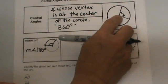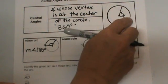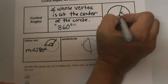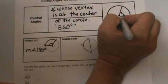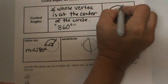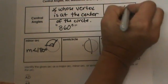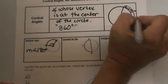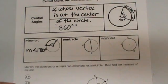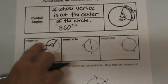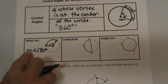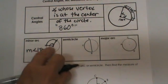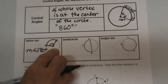So central angles take on the measure of the arc. Let's say for example this central angle measured 100 degrees. That means the arc associated with that would also take on a measure of 100 degrees. So the central angle and the arcs have matching measures. A minor arc is an arc that has a measure that is less than 180, therefore the central angle is less than half of the circle.